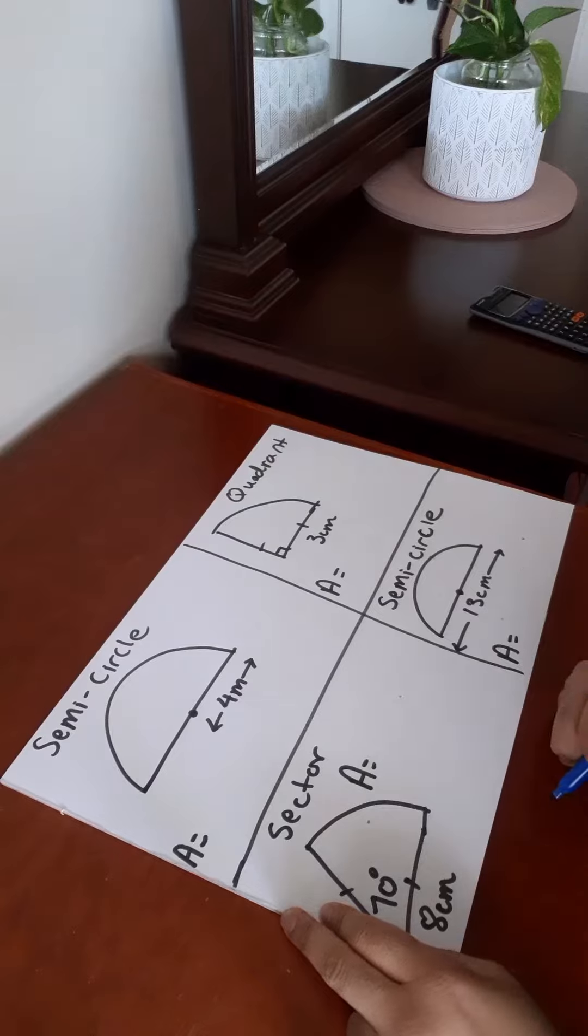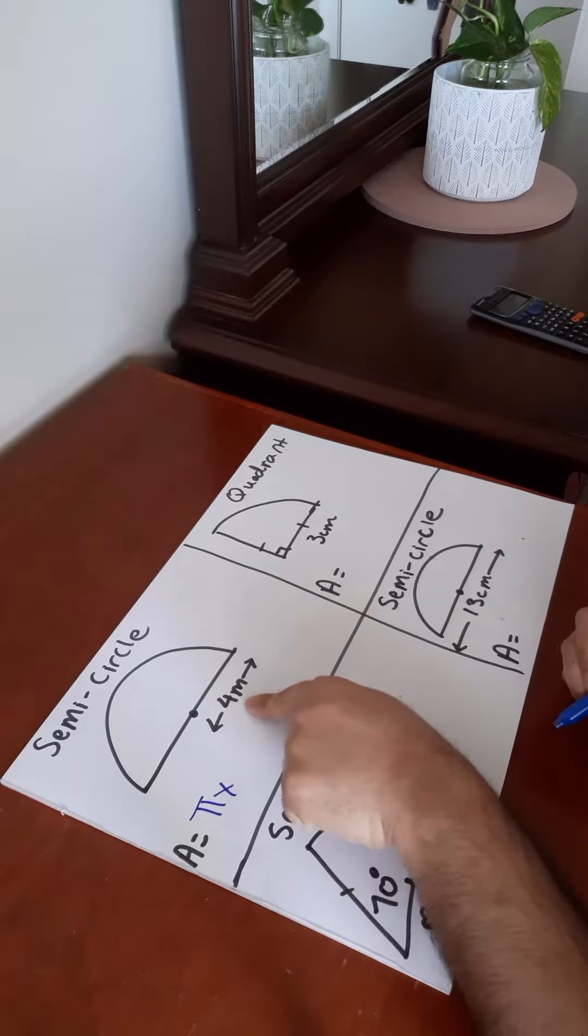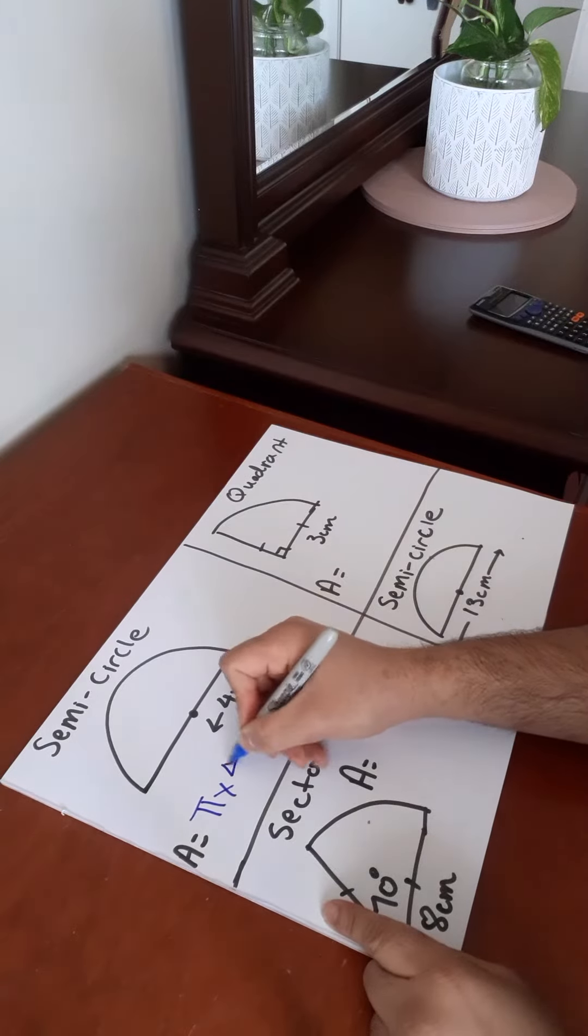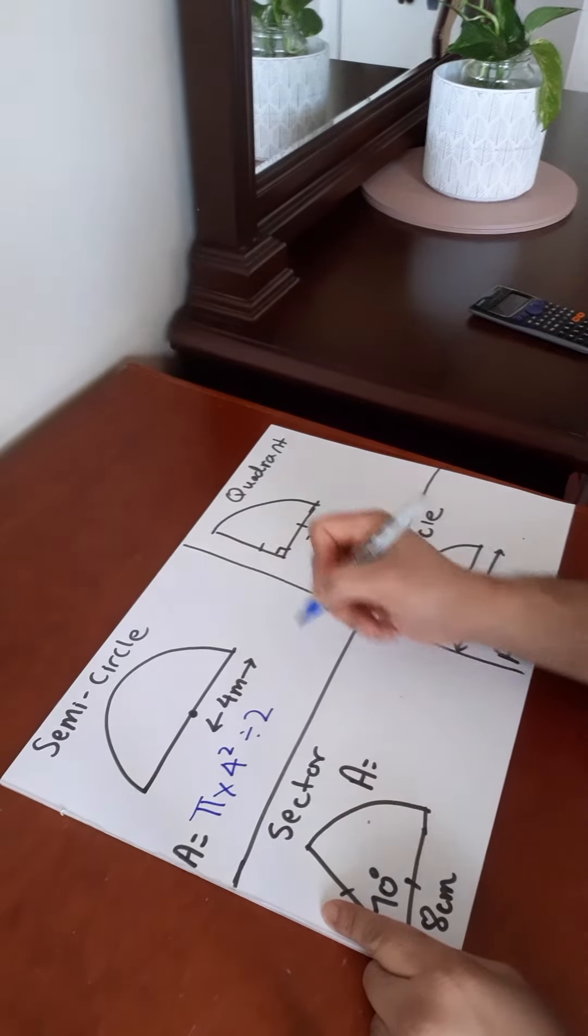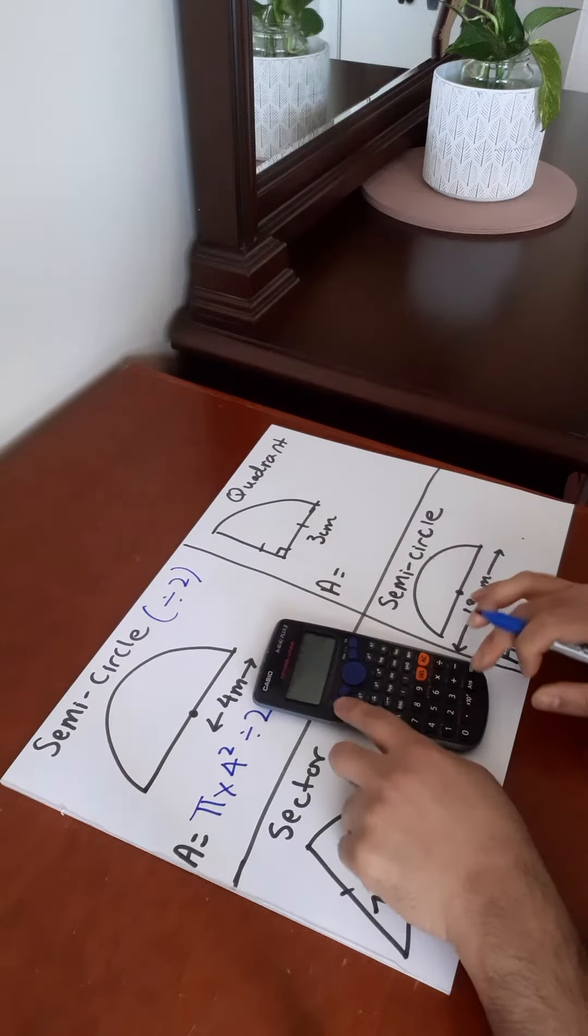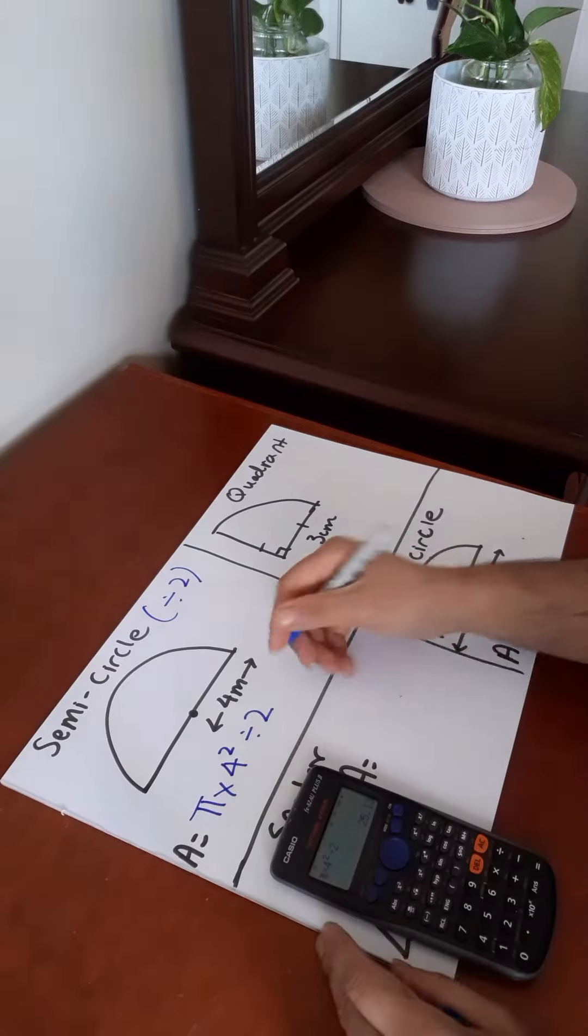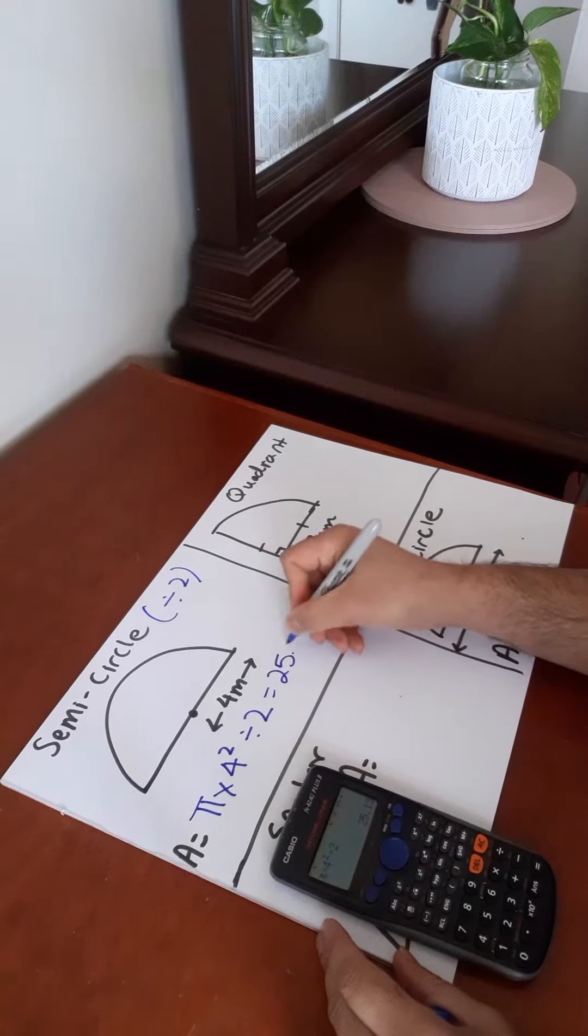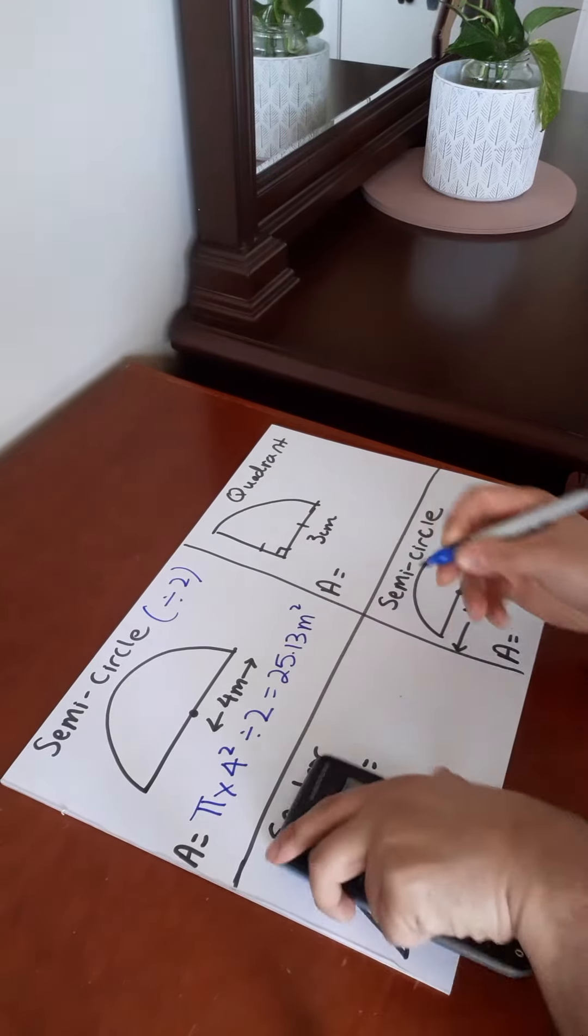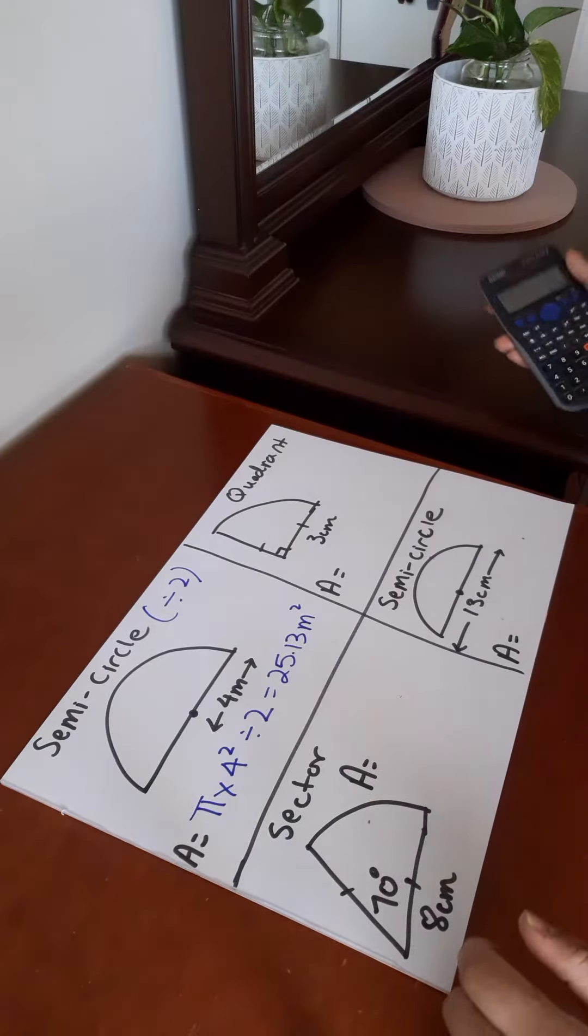So we start with semicircle. It's half a circle. So pi times the radius is 4 meters, 4 squared divided by 2 because we have a semicircle, half a circle. So we put that into our calculator and we get 25.13 meters squared. That is the area of part of a circle, which is a semicircle in this case.